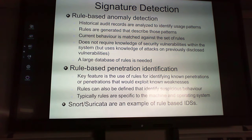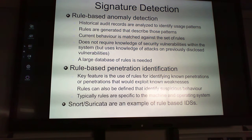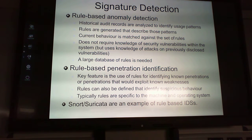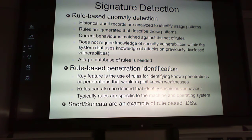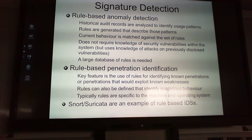Signature-based detection includes rule-based anomaly detection: historical audit records are analyzed to identify usage patterns, rules are generated that describe those patterns, and current behavior is matched against that pre-existing rule set. It does not require knowledge of security vulnerabilities, but does use knowledge of previously known attacks. However, it needs a large database of rules. Rule-based penetration identification works on key features specific to the machine and operating system.